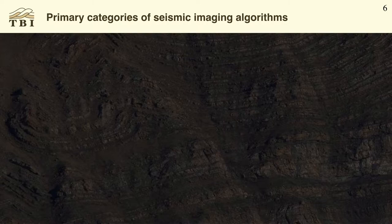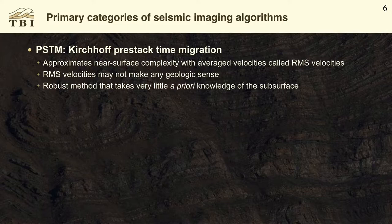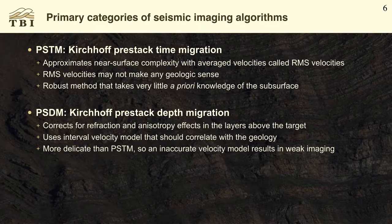So we're trying to resolve these issues with seismic imaging. The algorithms we use fall into these categories. PSTM — Kirchhoff pre-stack time migration — approximates near-surface complexity with averaged velocities called RMS velocities. These may not make geologic sense because RMS velocities average through near-surface effects of heterogeneity and anisotropy. It is a robust method that takes very little a priori knowledge of the subsurface. PSDM — Kirchhoff pre-stack depth migration — corrects for refraction and anisotropy effects in the layers above the target; it doesn't average through them, it corrects for the wave propagation effects.